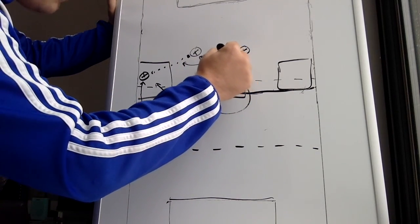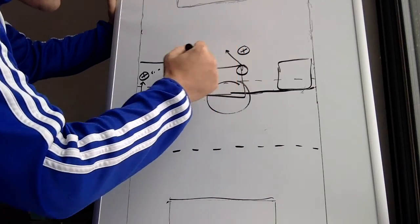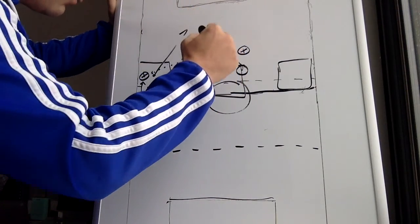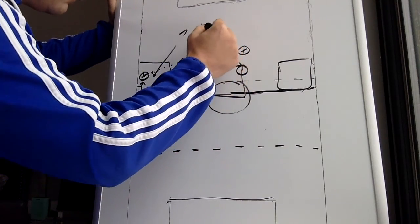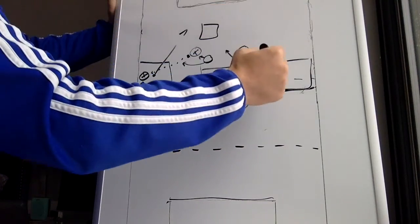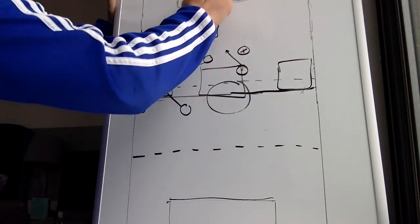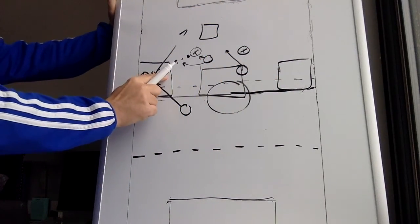Our other forward will probably make a penetrating run if we get a turnover. Boom. Straight away, we look to counter. One ball in, forward goes, should be a good counter attack right there. And that's a pressing area.